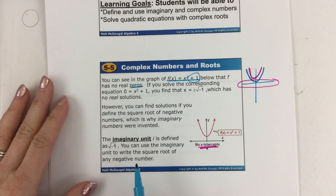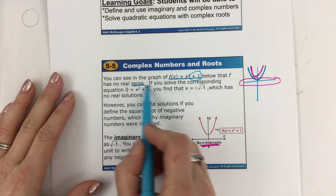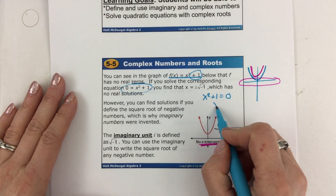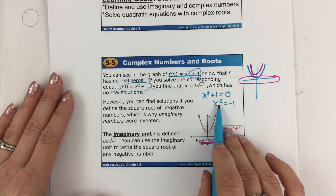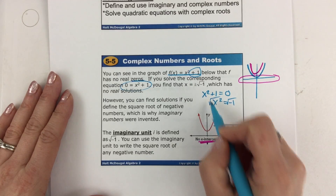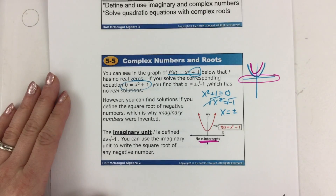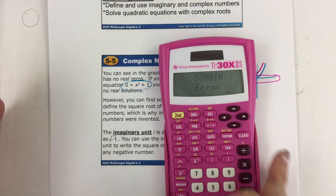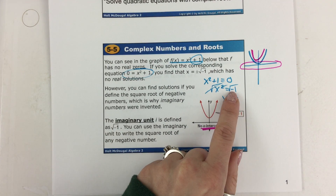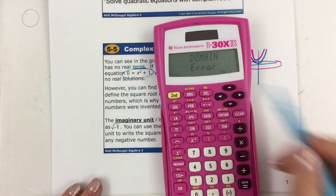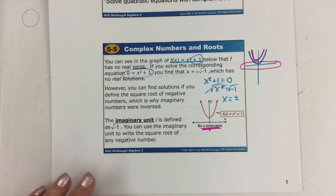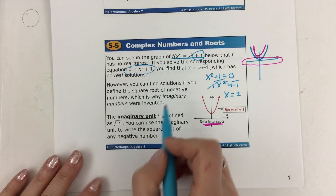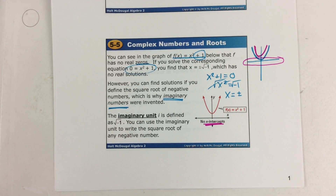So you're determined to find an answer, and you try to find it by solving an equation. You take x squared plus 1, set it equal to 0, then minus 1, so x squared equals negative 1. We learned that to cancel a power of 2, you take the square root — square root cancels a square, plus or minus. But you get the square root of negative 1 — and you're stopped again. There is no negative underneath the square root. Anytime you have a negative underneath the radical, it's going to say domain error; it doesn't exist. However, you can find these solutions if you go into the wonderful world of imaginary numbers.